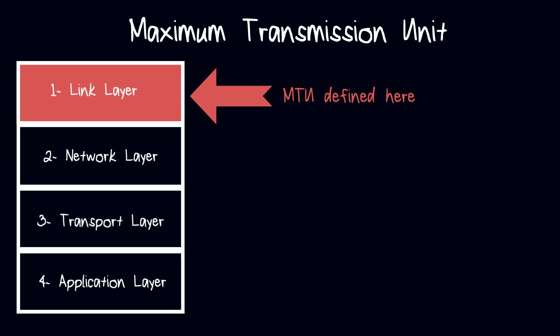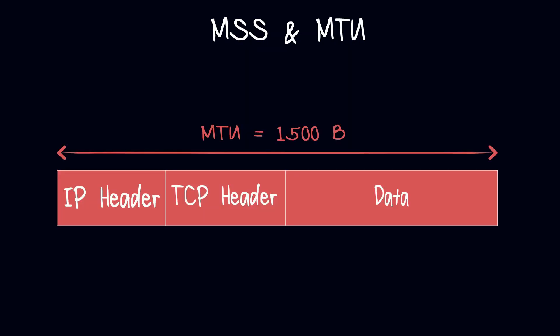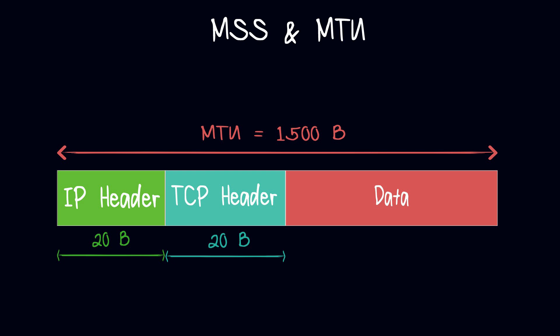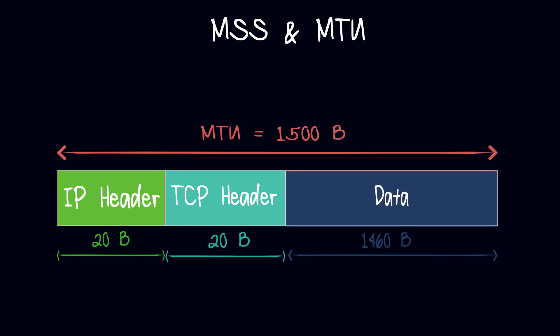Let's say the MTU for a particular network is 1500 bytes. To calculate the maximum segment size, we need to subtract the size of the IP header and TCP header. For example, if the IP header and TCP header combined are 40 bytes, the maximum segment size would become 1460 bytes.